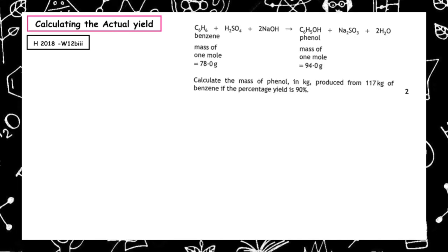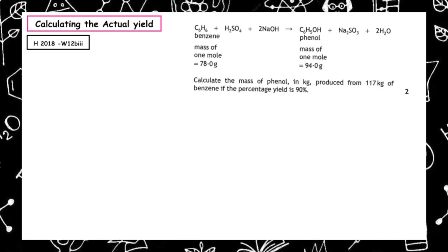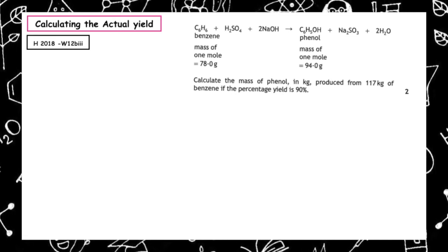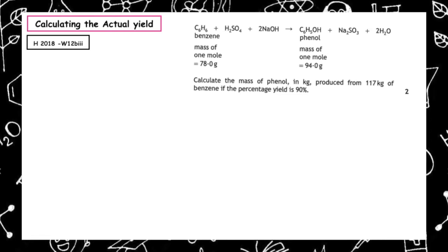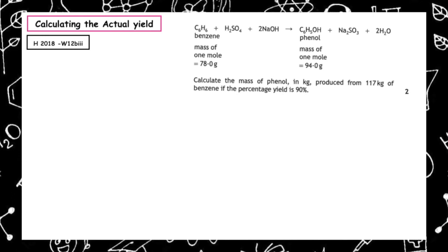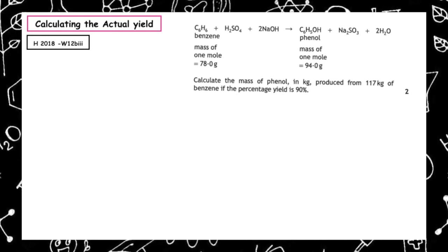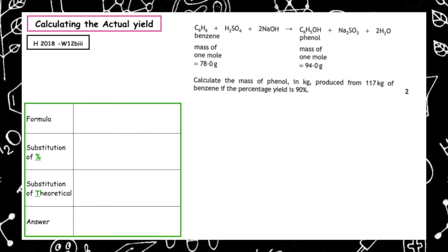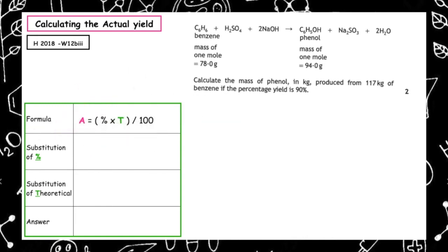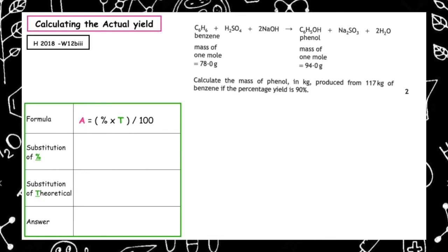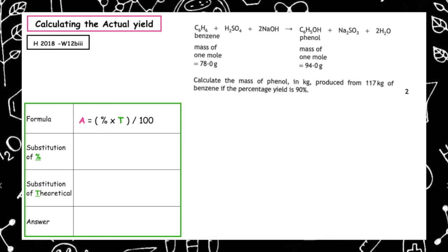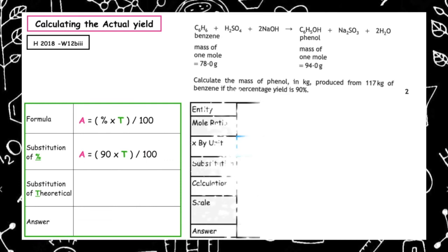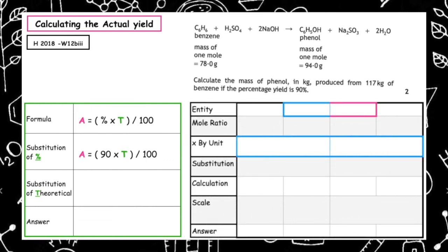This past paper question is from the Higher 2018 Written 12B Part 3. We are given a balanced equation and asked to calculate the mass of phenol in kilograms produced from 117 kilograms of benzene if the percentage yield is 90%. This question wants us to calculate the actual yield. So we rearrange the formula: actual is equal to percentage times theoretical divided by 100. Substituting the percentage: actual equals 90 multiplied by theoretical divided by 100.